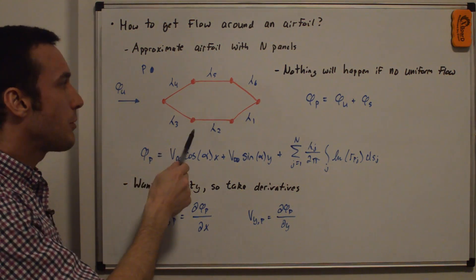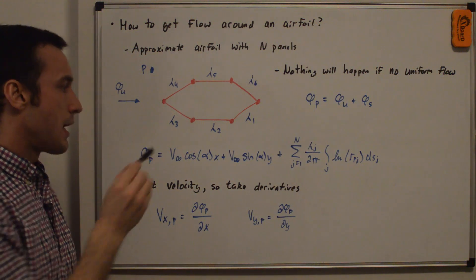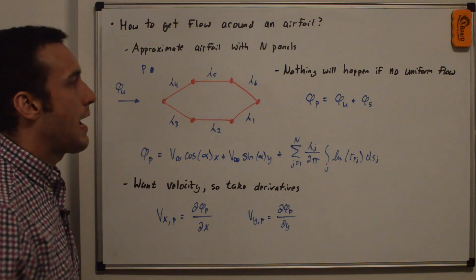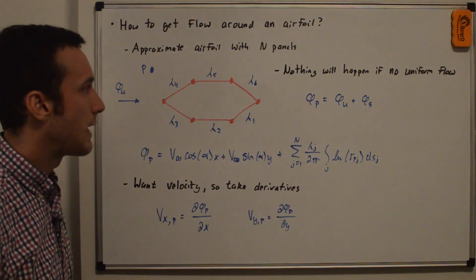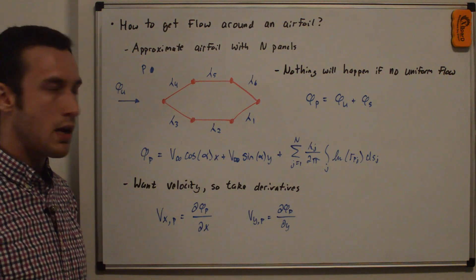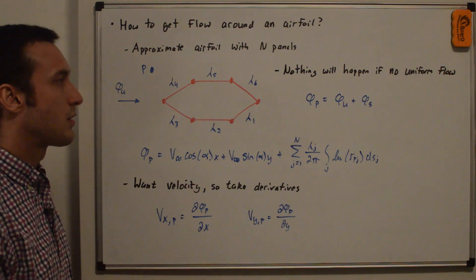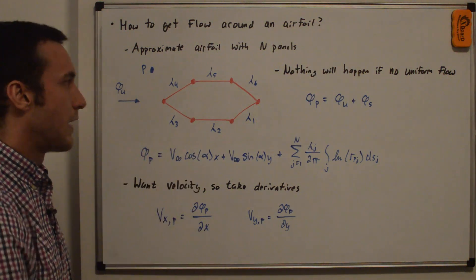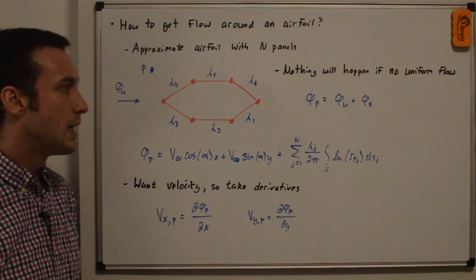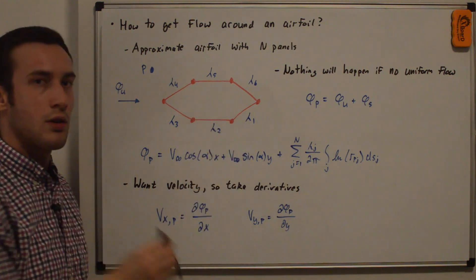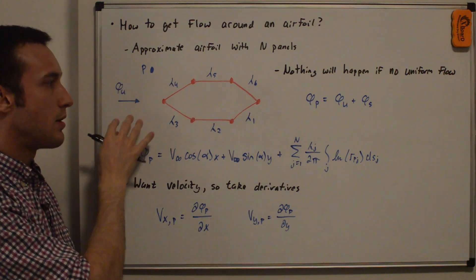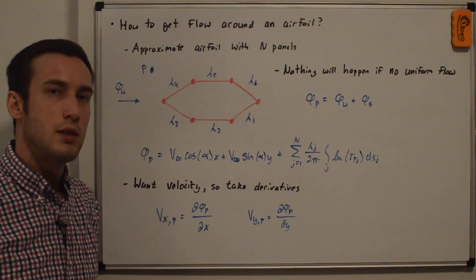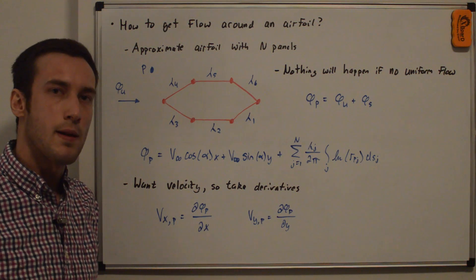If you define your geometry with n panels, know the free stream velocity and angle of attack, and just plug in random source panel strengths, you'll get flow that goes through the airfoil — not physically meaningful. The crux of this method is solving for the panel strengths such that, given the flow conditions, the flow over the airfoil is correct. That discussion is the topic of my next video, so stay tuned. Thanks for watching.